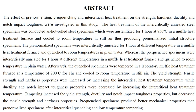Abstract. The effect of pre-normalizing, pre-quenching, and intercritical heat treatment on the strength, hardness, ductility, and notch impact toughness were investigated in this study. The heat treatment of the intercritically annealed steel specimens was conducted on as-hot-rolled steel specimens which were austenitized for one hour at 850 degrees Celsius in a muffle heat treatment furnace, and cooled to room temperature in still air, thus producing pre-normalized initial structure specimens.